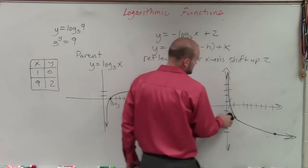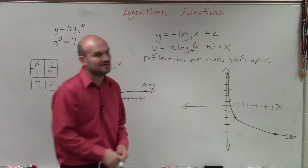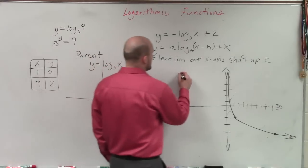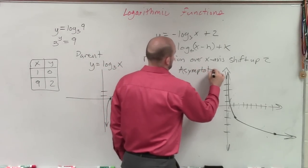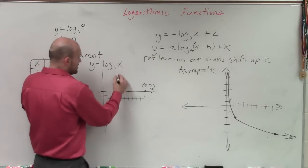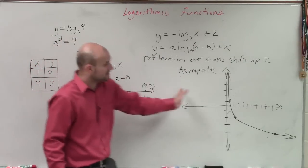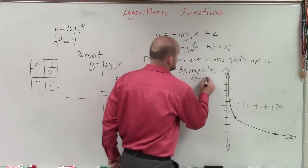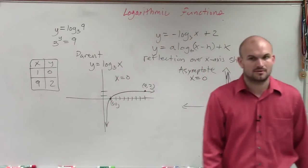So that's how we use our transformations to be able to graph it. Now, when graphing, though, we also have to be able to determine what is our asymptote. The asymptote here, the asymptote of this equation, remember, is when x equals 0. Well, did I shift the graph left to right at all? No. So guess what? The asymptote remains the same.